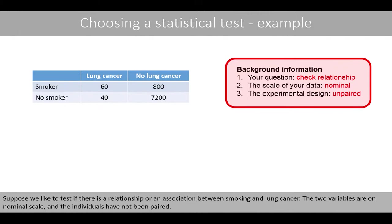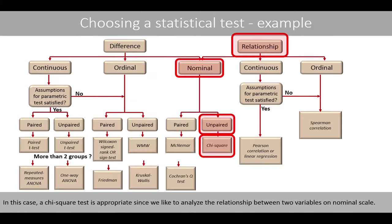Suppose we'd like to test if there is a relationship or an association between smoking and lung cancer. The two variables are on a nominal scale and the individuals have not been paired. In this case, a chi-square test is appropriate since we'd like to analyze the relationship between two variables on a nominal scale.